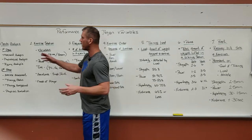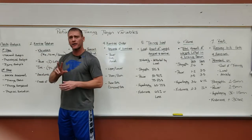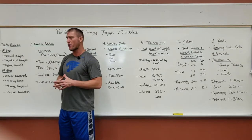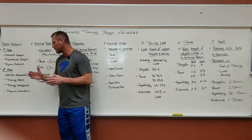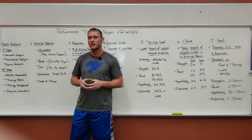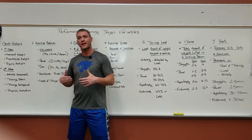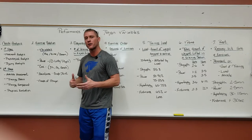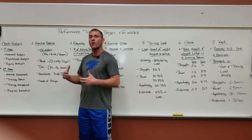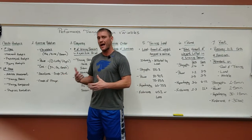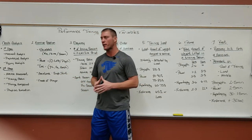The first variable would be a needs analysis and that comes in a two-stage process. The first stage involves a movement, physiological, and injury analysis. The movement analysis is understanding the movements that are most common in the sport. For example, in basketball, we need to understand what movements our athletes are going to be performing on the court so we may address those in the weight room.